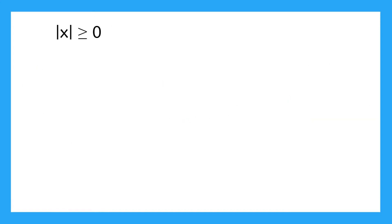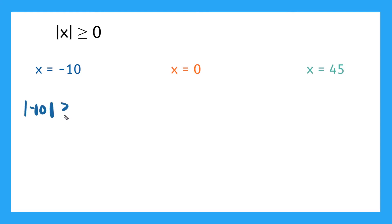Now let's try one that's a little different. This one says the absolute value of x is greater than or equal to zero. Let's test our solutions. Starting with the first one, is negative 10 a solution to our inequality? We plug negative 10 into our absolute value and we have the absolute value of negative 10 is greater than or equal to zero.